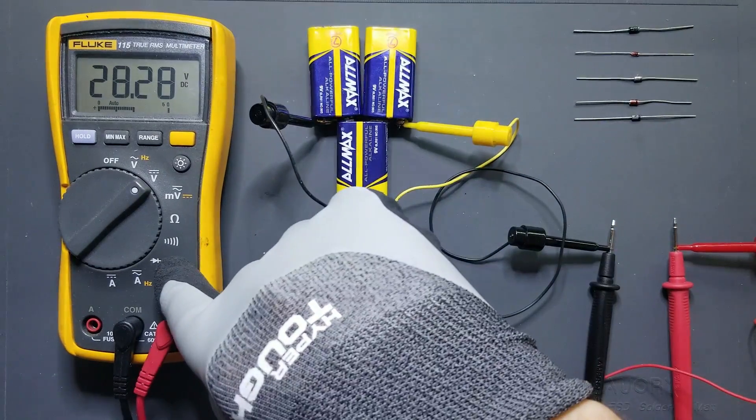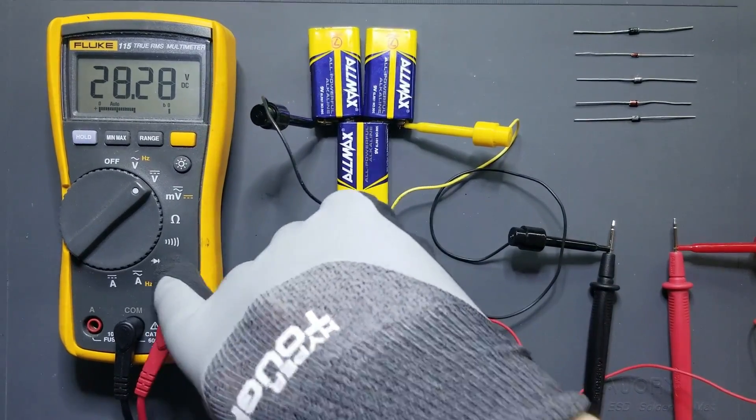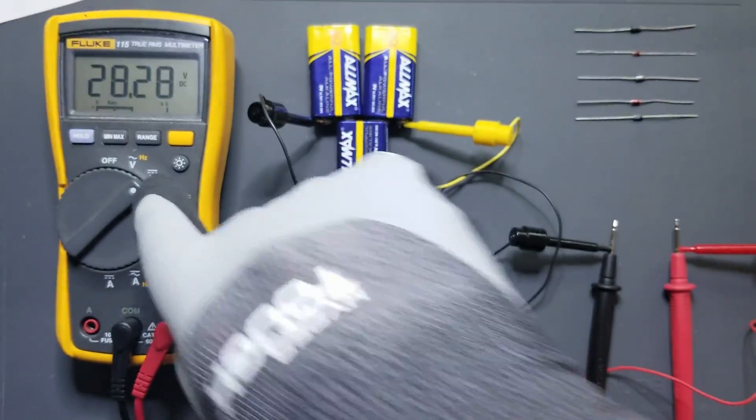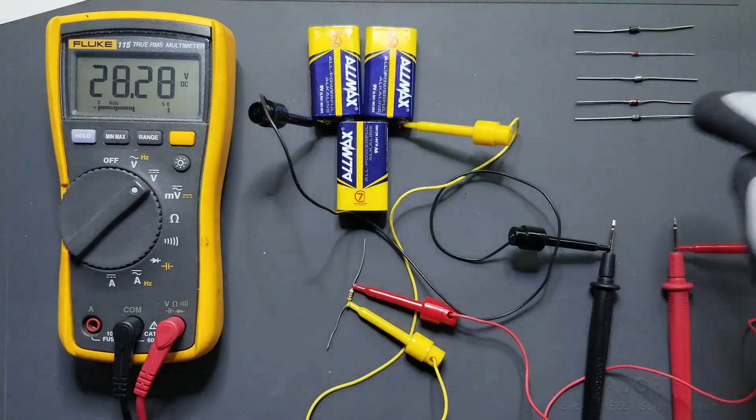Notice we are not going to use the diode check function because it does not work with Zener diodes. Instead, we are going to use the DC voltage function, because what we are doing is measuring the voltage across the diode.